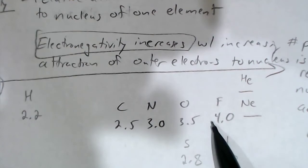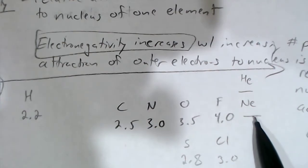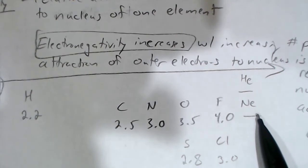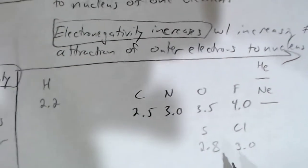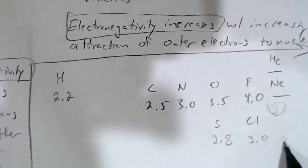So as we go to the right, electronegativity increases. But neon, which is furthest to the right, we don't even know its electronegativity. It's a noble gas — we have not been able to observe it bond to any other element, so we can't see the attraction of an electron in a bond between neon and another element. Therefore, we can't know the electronegativities of the noble gases.